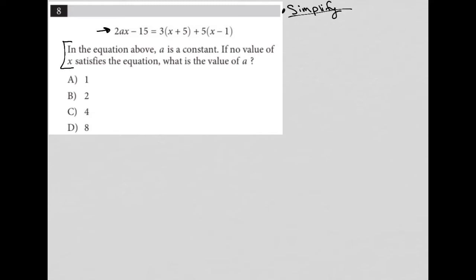So what does that mean for me? Before I even read the question, I'm going to take this 2AX minus 15 equals 3(X plus 5) plus 5(X minus 1) and simplify it. I have 2AX minus 15, there's nothing to simplify there. Equals...